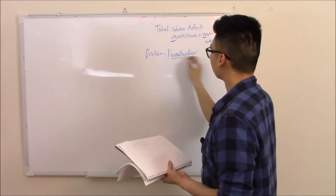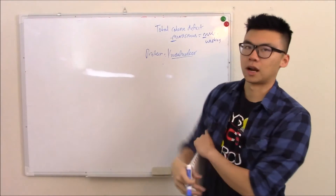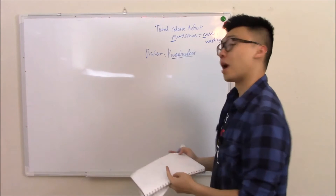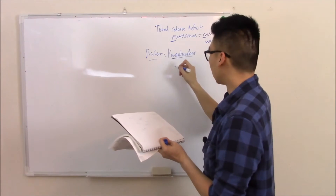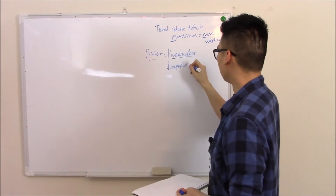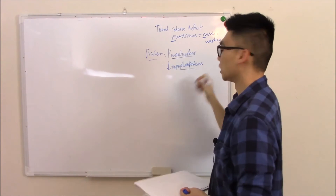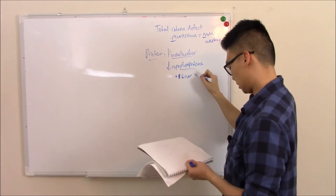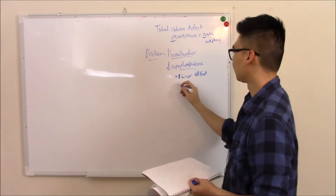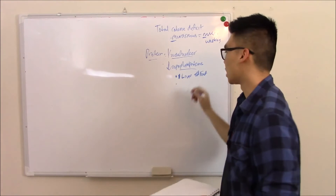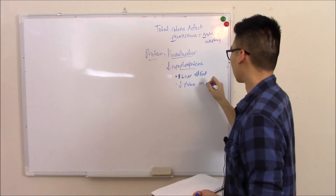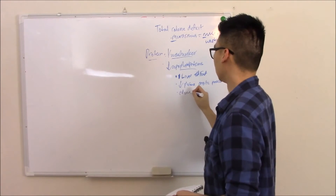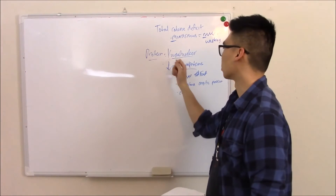Protein deficit has another fancy name called kwashiorkor. This is what you see in those commercials asking you to donate food for starving children. They have really skinny limbs but a really distended belly. Why? Because you're lacking protein, you're not making apolipoproteins — the carrier for fat — so all that fat gets stored in your liver, causing fatty liver. Also, because you're not making those proteins in your blood, you have decreased plasma oncotic pressure, so fluid leaves your blood vessels causing edema and that distended belly.